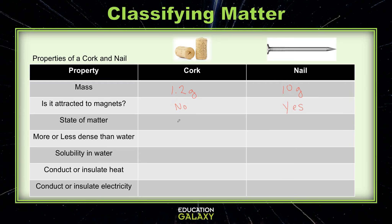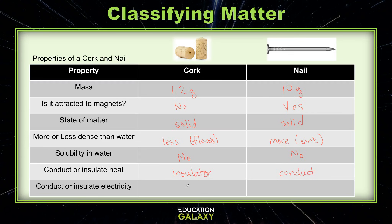They are both in the solid state of matter. Are they more or less dense than water? The cork is less dense because it floats, and the nail is more dense because it would sink. Are they soluble in water? Neither of these objects are soluble in water. Do they conduct or insulate heat? A wooden cork would insulate heat because wood is a great insulator, whereas the metal nail would conduct heat. Similarly, the wooden cork would insulate electricity, and the metal nail would slightly conduct electricity.